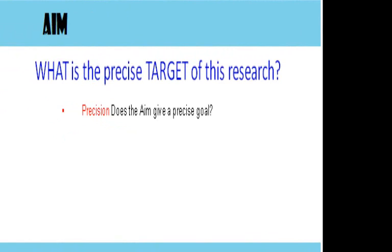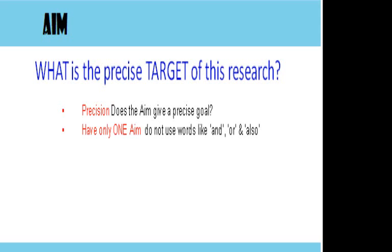You have to be precise — you need a precise goal. In the same way, if you're giving directions to someone and you want to arrive at the university, to simply say 'Birmingham' or 'the city centre' doesn't give enough detail to ensure that you arrive at the destination you are hoping for. Make sure that you only have one aim. If you have more than one aim you will have to do more research, so avoid words like 'and' or 'will also', as these indicate you're doing one thing and a different thing as well.